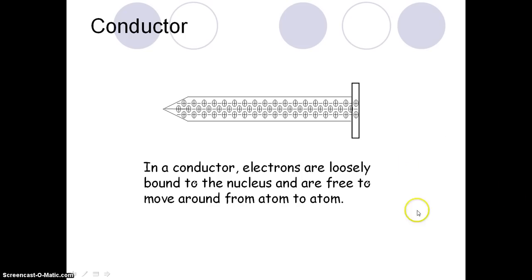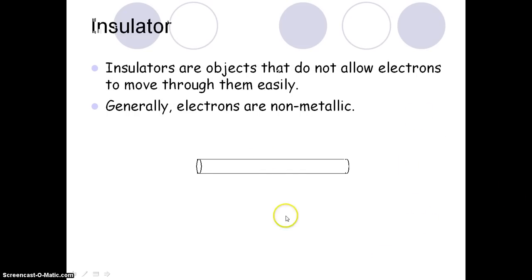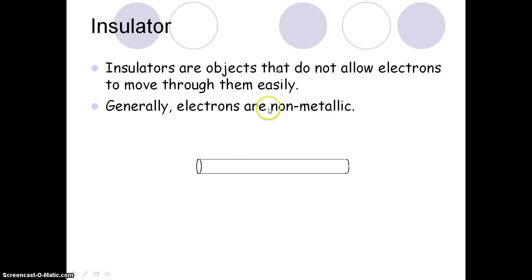Our second object is a plastic rod, and if you remember, we said that plastic is an insulator. Insulators are objects that do not allow electrons to move through them very easily — it's difficult for electrons to move through insulators. Generally, insulators are non-metallic.